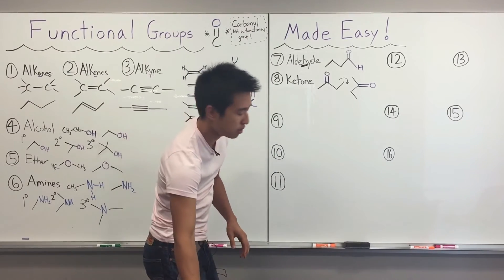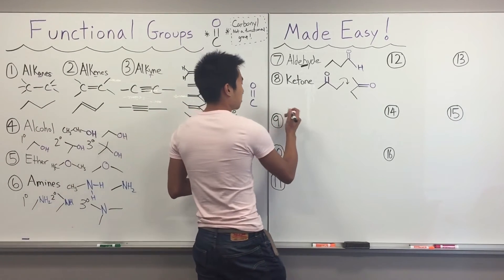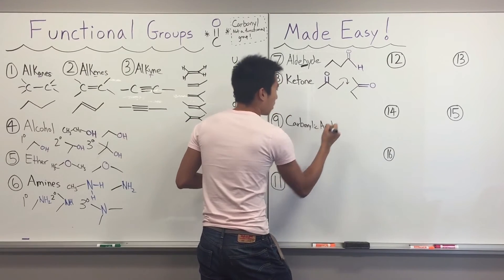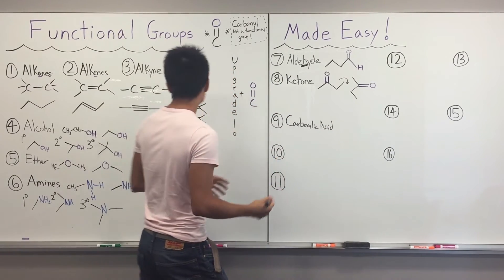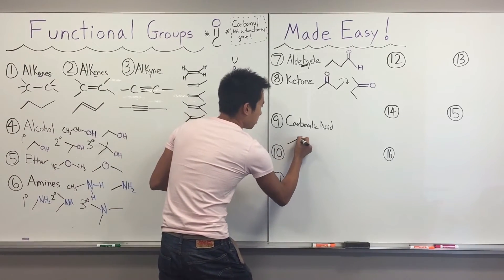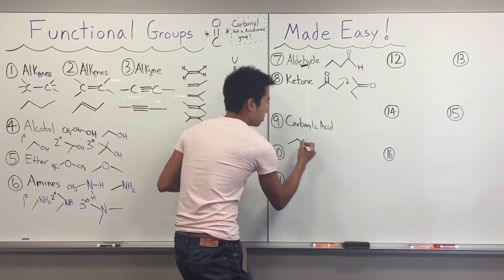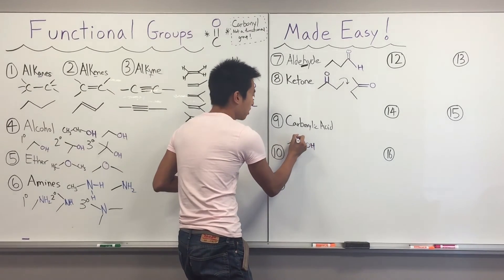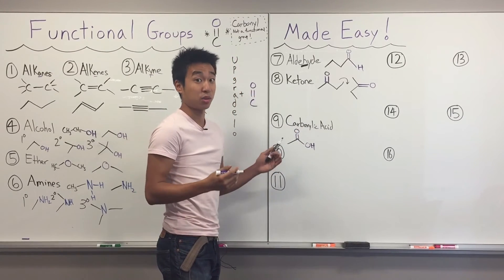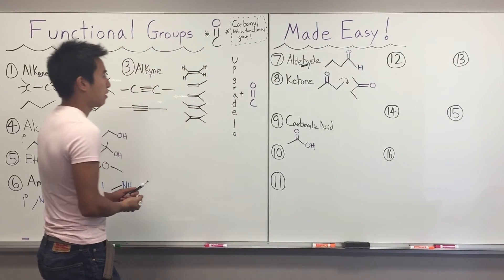Next is the upgraded alcohol — carboxylic acid. Take a primary alcohol and upgrade the carbon right next to the OH with a carbonyl. That's it — that's what a carboxylic acid is: a carbon chain ending in a carbonyl with an OH group attached.